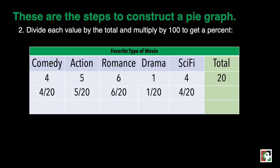Now we are ready to multiply each fraction by 100 to get the percentage. For comedy: 4 divided by 20 times 100 equals 20%. For action: 5 over 20 times 100 equals 25%. For romance: 6 over 20 times 100 equals 30%. For drama: 1 over 20 times 100 equals 5%. And for sci-fi: 4 over 20 times 100 equals 20%. Adding all these gives 100%.